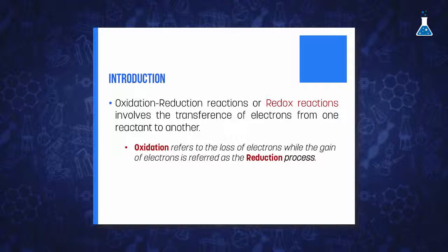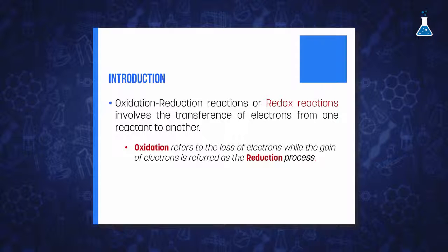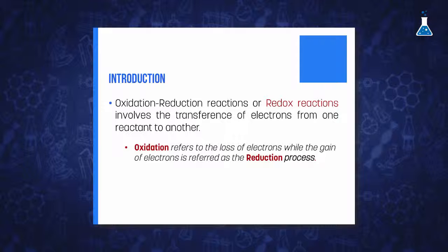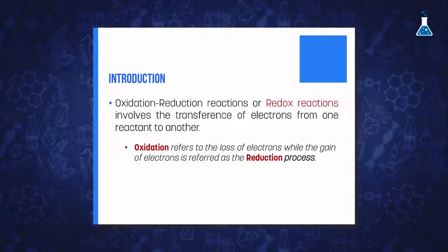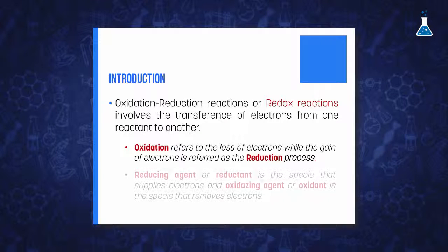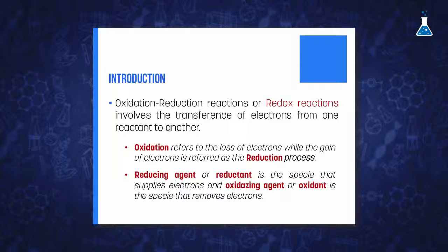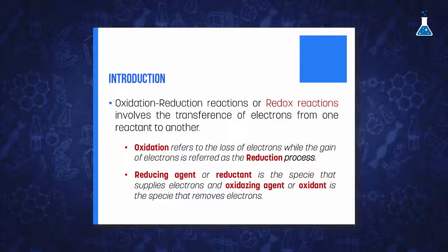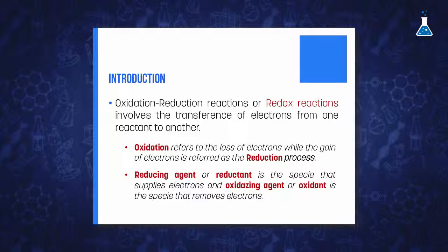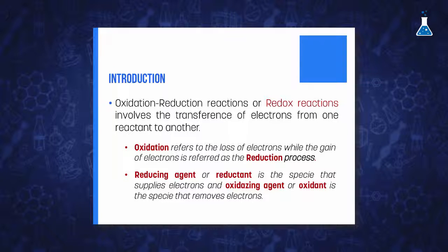The loss of electrons is known as the oxidation process, while the gain of electrons is referred to as the reduction process. The species that supplies electrons is the reducing agent, and the species that removes electrons is the oxidizing agent.